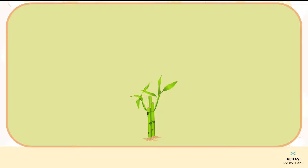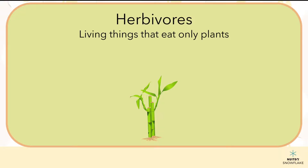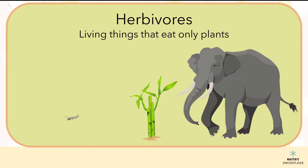A lot of other living things eat plants. Some living things eat only plants — they are called herbivores. Herbivores can be very tiny, like insects, and very large, like elephants. A plant-eating herbivore gets its energy from plants, and plants get their energy from the sun.